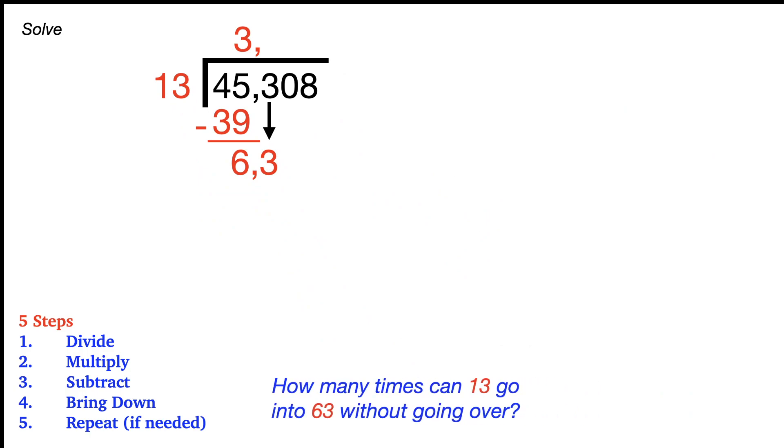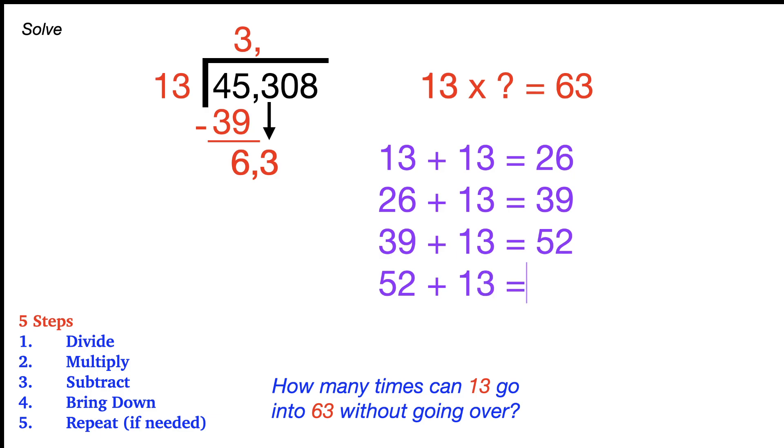So next step is how many times can 13 go into 63 without going over? In other words, 13 times what is 63 or close to it? Let's try repeated addition for this one. 13 plus 13 is 26, plus 13 more, 39, 52, and 13 more would be 65. The more you do this, you can do it mentally, but I'm just showing you. I can see that 65 is too many, which means we don't need that last group of 13. And we have a total of four.